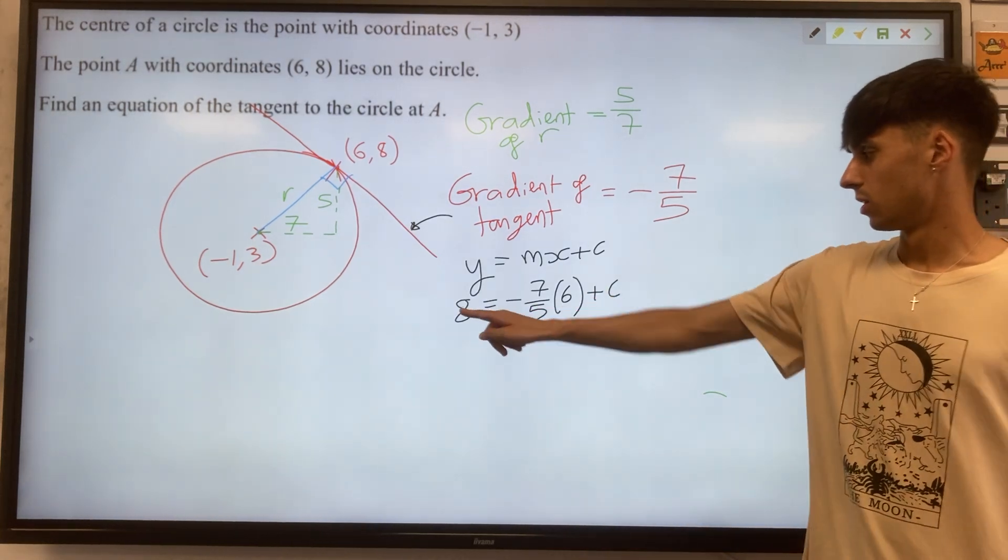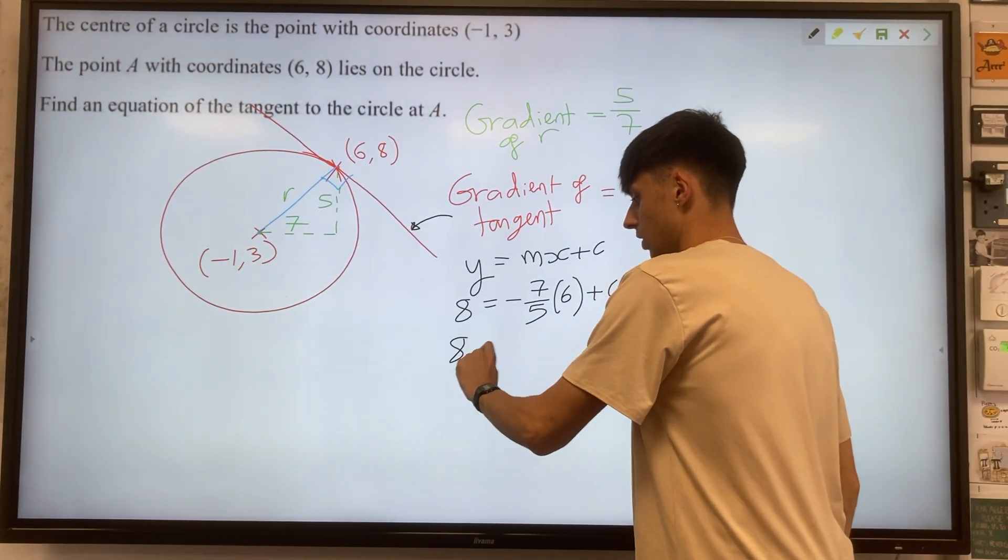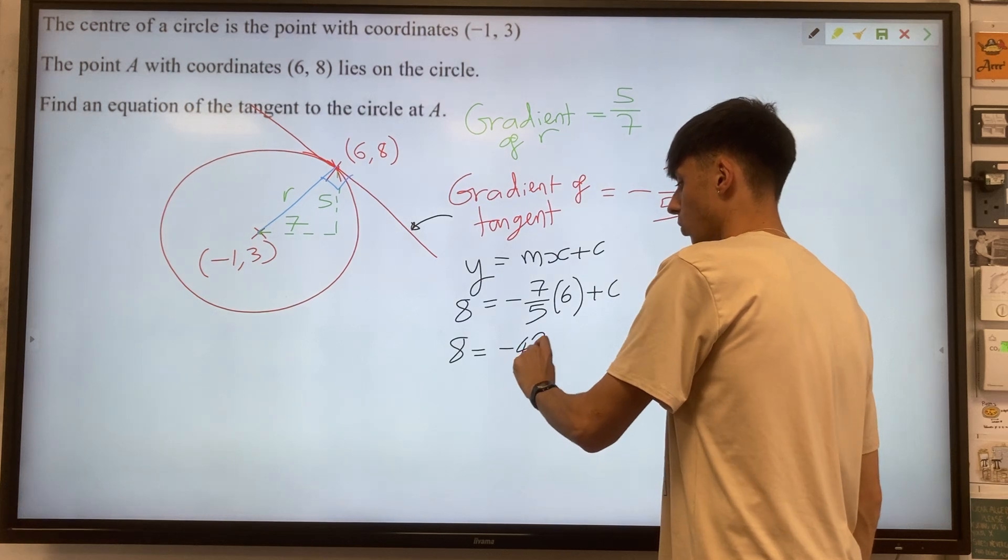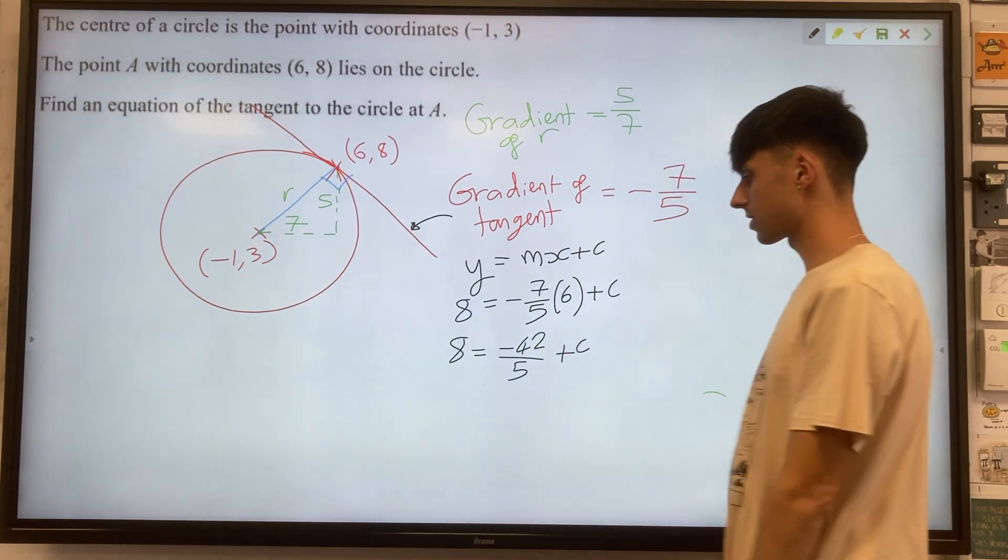And we want to find the value of c. So we can say 8 equals minus, that will be 42 over 5, plus c.